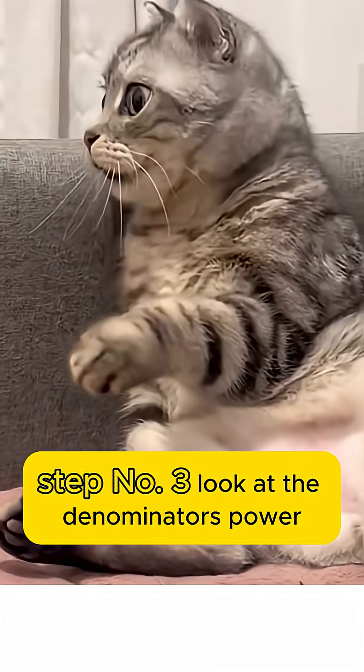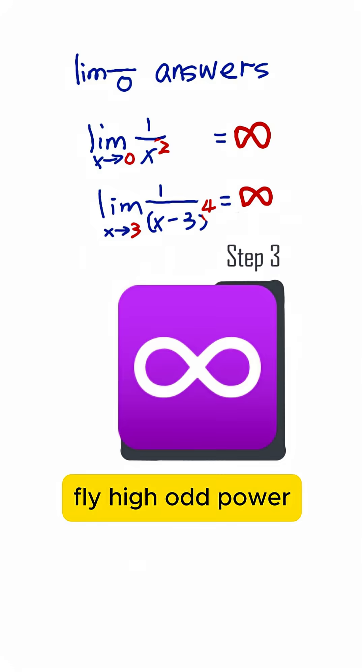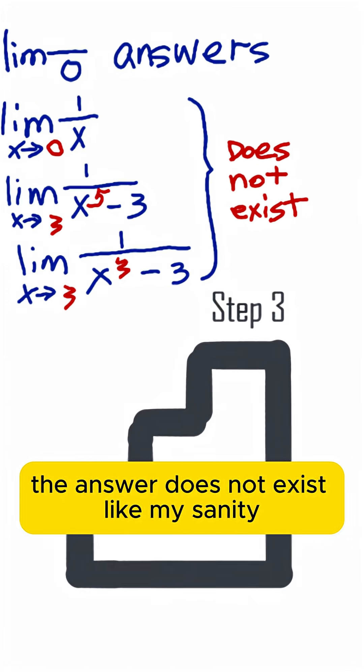But what if it's still broken? Step number three: look at the denominator's power. Even power? You are heading to infinity. Fly high! Odd power? The answer does not exist.